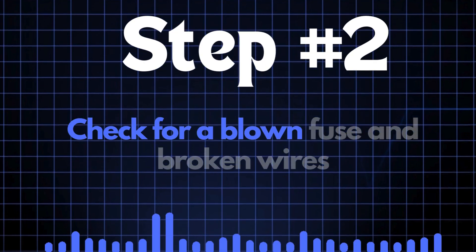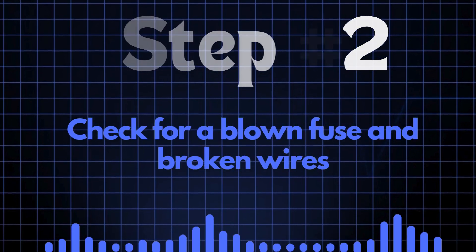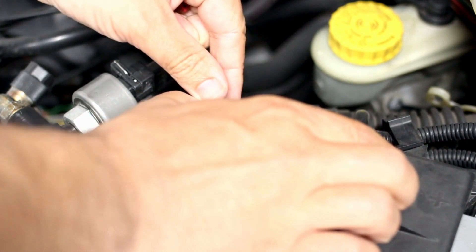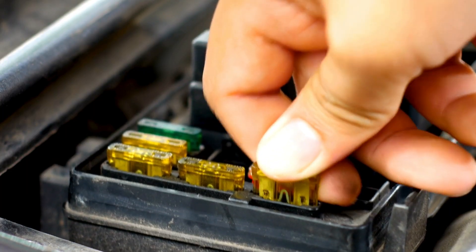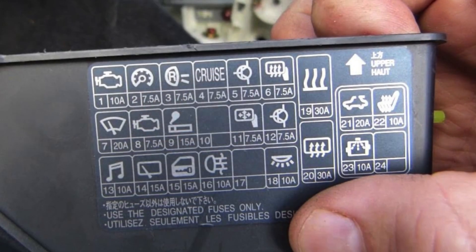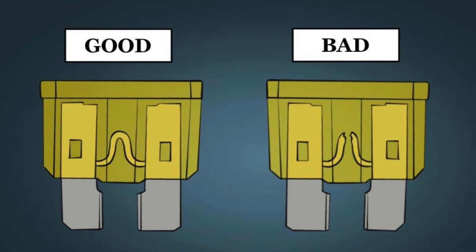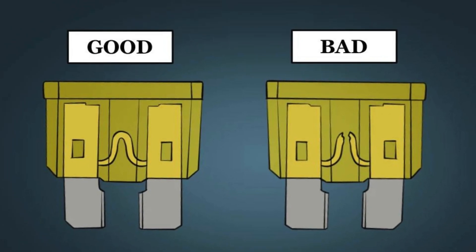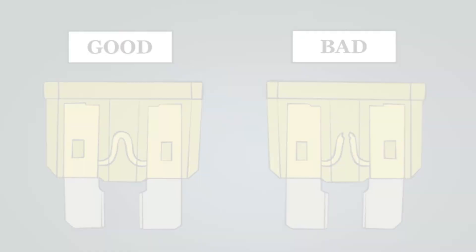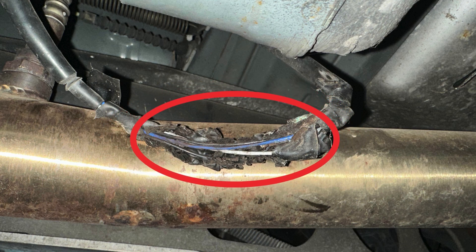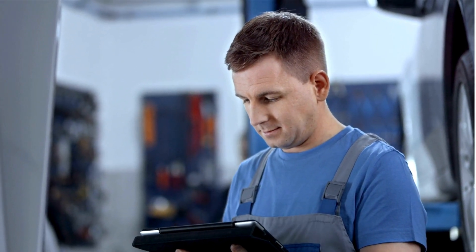Step 2: Check for a blown fuse and broken wires. First, locate your car's fuse box and find the specific fuse that controls the oxygen sensor heater circuit. Check the diagram on the back of the fuse box cover to identify the correct fuse. Once found, inspect it closely — if the fuse link is broken, it'll need to be replaced. Next, check the wiring around the oxygen sensor for any broken or frayed wires. If you spot any damage, repair the wires and recheck to see if the P0052 code is cleared.